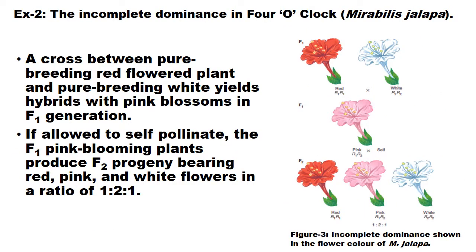This is a second example of incomplete dominance. It occurs in four o'clock plants, whose scientific name is Mirabilis jalpa. It has two pure breeds: red flower plant and white flower plant. The cross between these two plants produces pink flower plants in F1 generation. The self-pollination of F1 hybrid produces F2 progeny bearing red, pink, and white flower plants in a ratio of 1:2:1.